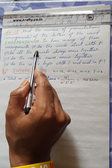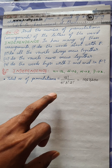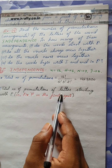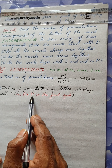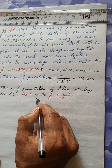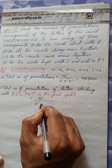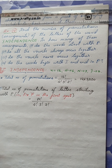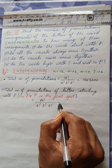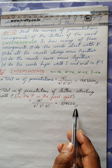For the first condition — words start with P — fix P in the first spot. Only 11 remaining letters are eligible for arrangement. E is still repeated 4 times, N 3 times, D 2 times. So the answer is 11! / (4! × 3! × 2!) = 1,38,600.